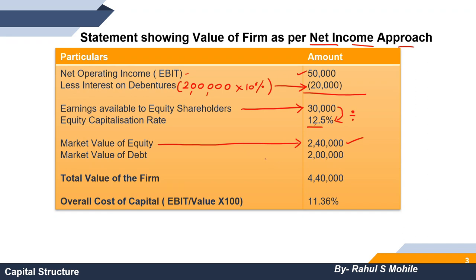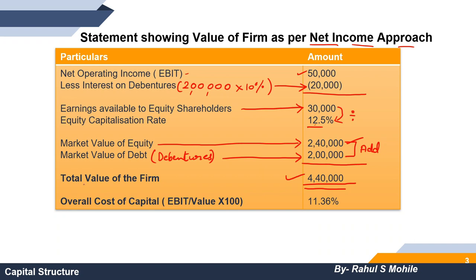Then we write the market value of debt, which is the value of the debentures given in the question — that is 2,00,000. Now we add the market value of equity and the market value of debt: 2,40,000 plus 2,00,000 equals 4,40,000. This is called the total value of the firm. It's quite a simple calculation.